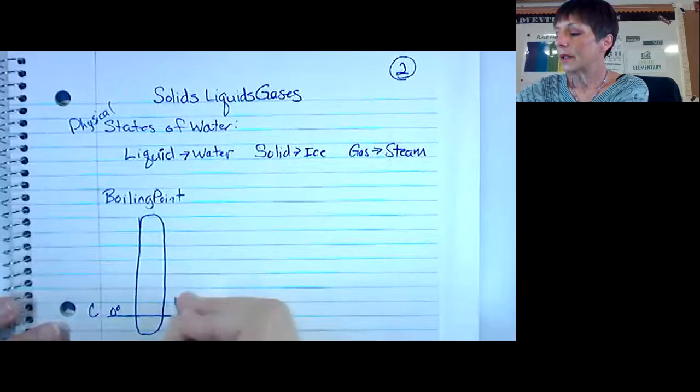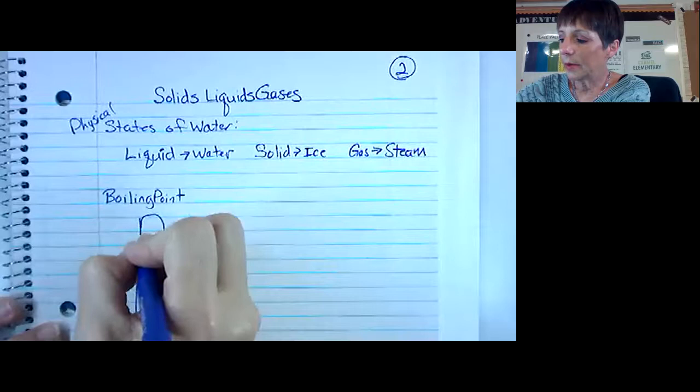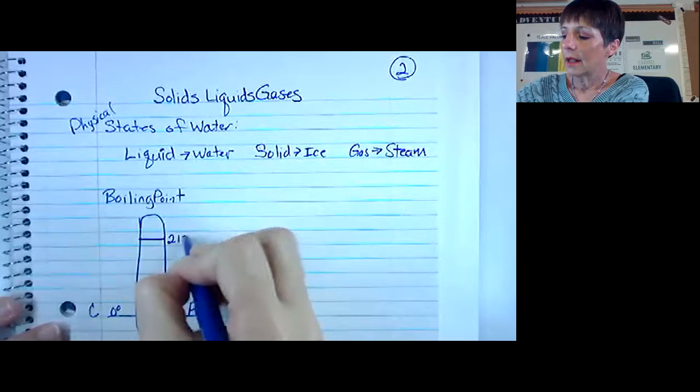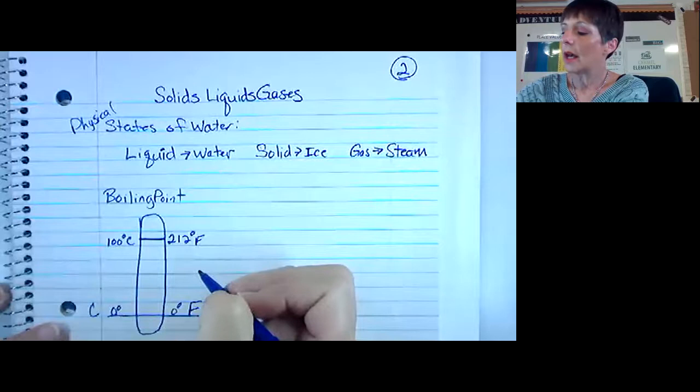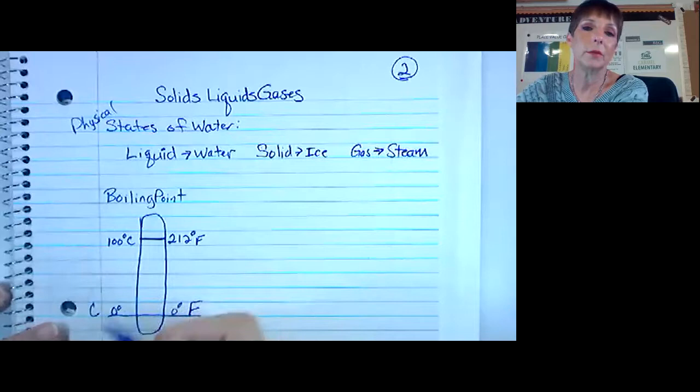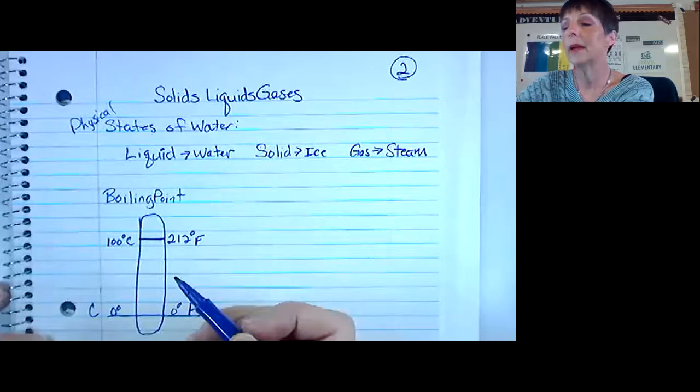The boiling point is 200 degrees Fahrenheit or 100 degrees Celsius. This is the boiling point. Remembering, in America we use Fahrenheit but everybody else in the world uses Celsius, kind of like with the metric, we use customary units, everybody else uses metric units.